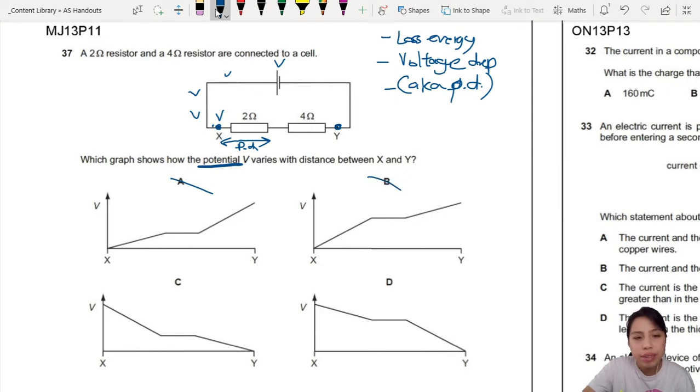A, A, A, B is not correct. Decreasing, decreasing. Okay, yeah. So, when you go across the first resistor, you will drop. Okay, so drop a bit, drop a bit. Okay, C and D is okay.